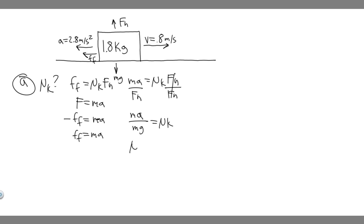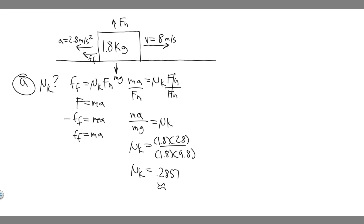Plugging in values: mu sub k equals 1.8 times 2.8 divided by 1.8 times 9.8. The 1.8 cancels, giving us 2.8 divided by 9.8, which equals approximately 0.2857 — rounding to 0.286. There are no units for the coefficient of kinetic friction, so the answer to part A is mu sub k equals 0.286.